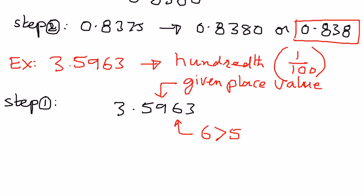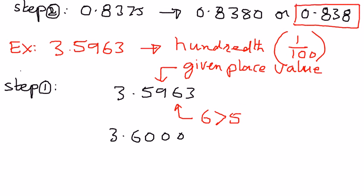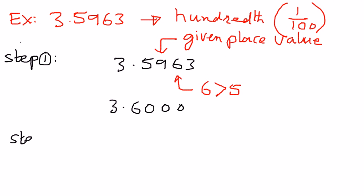The way we can write this is as follows: when we add 1 to 9, it becomes 10. We replace that digit with 0 and carry 1 to the tenth place, so the 5 becomes a 6. We add 1 to the 5, giving us 3.600. As step number 2, we come back and state: the number 3.5963, when rounded to the nearest hundredth place, is 3.600.